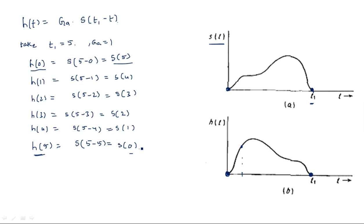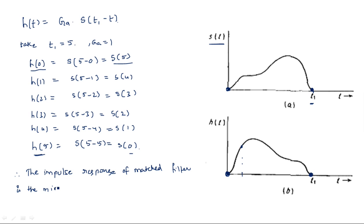This means H(T) is a mirror image of the received signal S(T). Therefore, we conclude that the impulse response of the matched filter is the mirror image of the received signal S(T). The matched filter impulse response H(T) = G_A · S(T₁ - T) is equal to the time-reversed (mirror image) version of the received signal. Thank you.